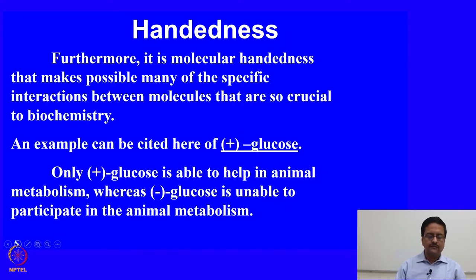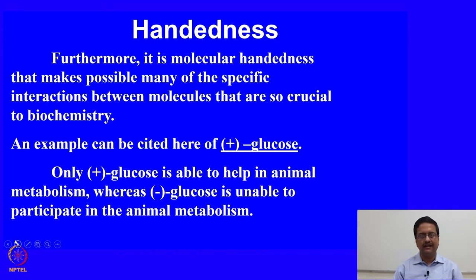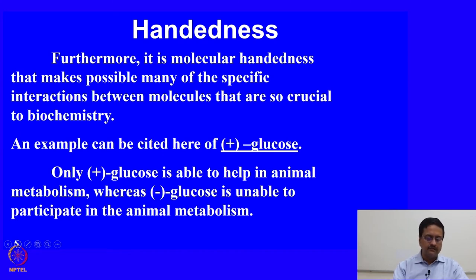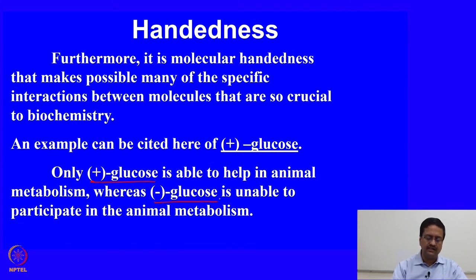It is molecular handedness that makes possible many specific interactions between molecules that are crucial in biochemistry. Some handed molecules are biologically active while their opposite-handedness counterparts are biologically inactive or less active. For example, only (+)-glucose is able to participate in animal metabolism, whereas (−)-glucose is unable to participate in animal metabolism.